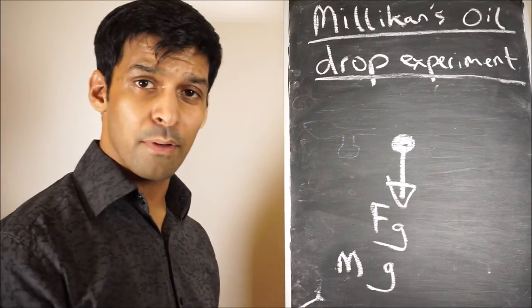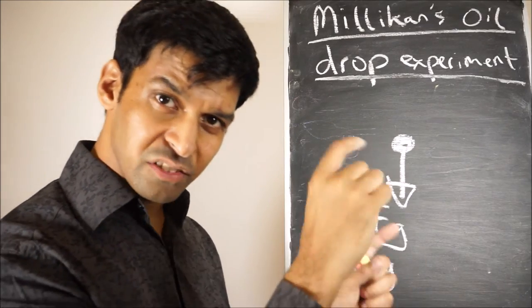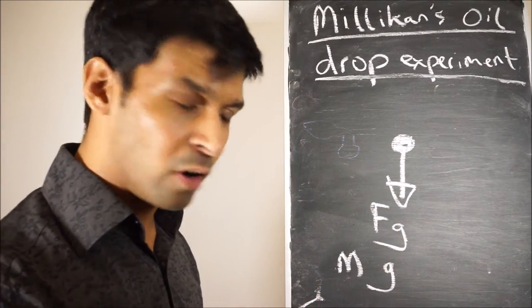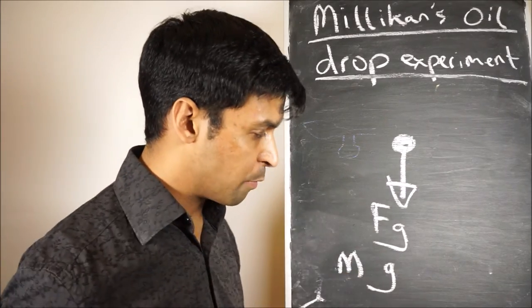Mass itself, now remember they had a microscope so they can see it. And if they can see it and they had a little scale by the side, they could work out the volume. And mass is worked out as density times volume. So that's how they work out mass.